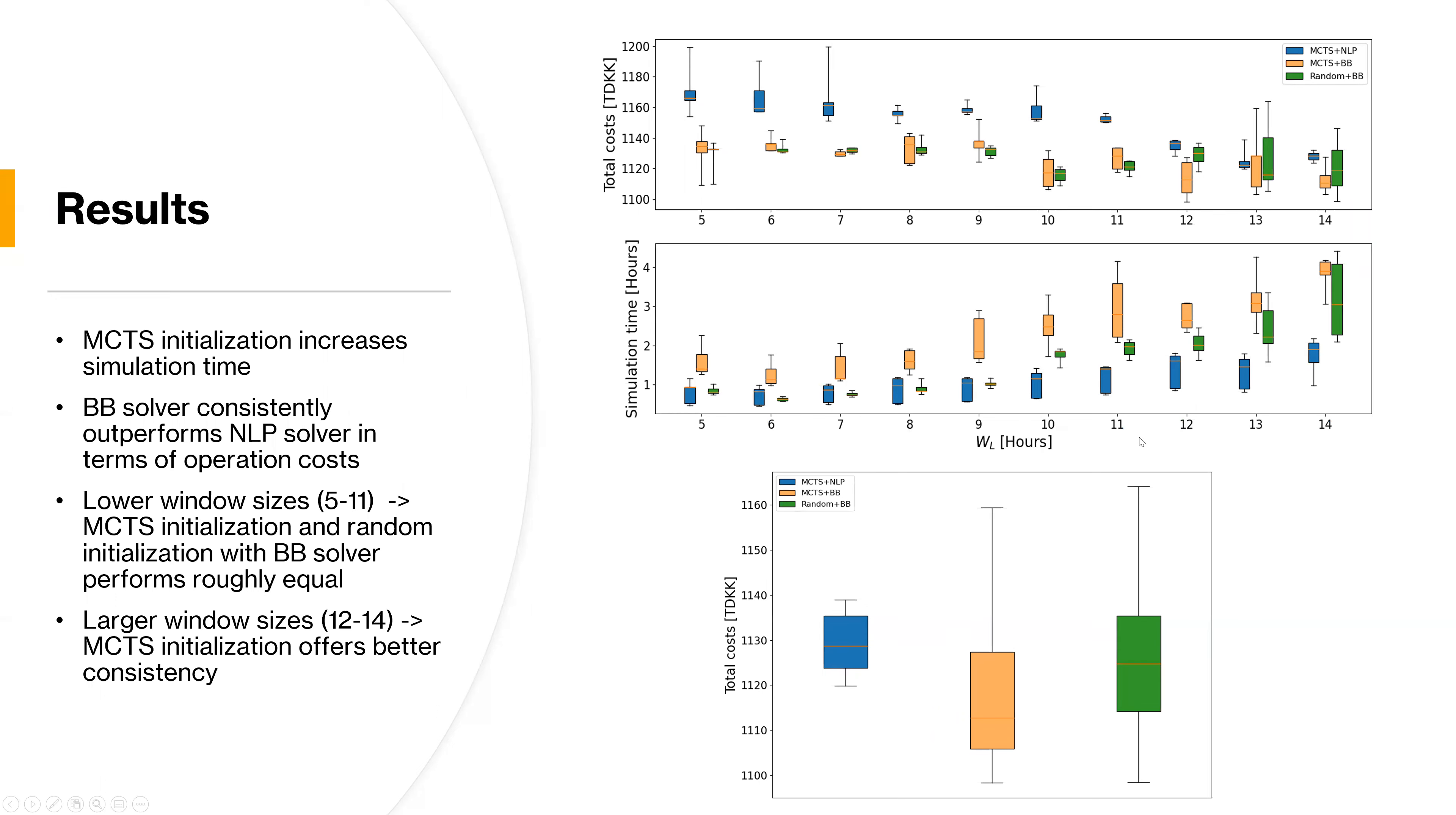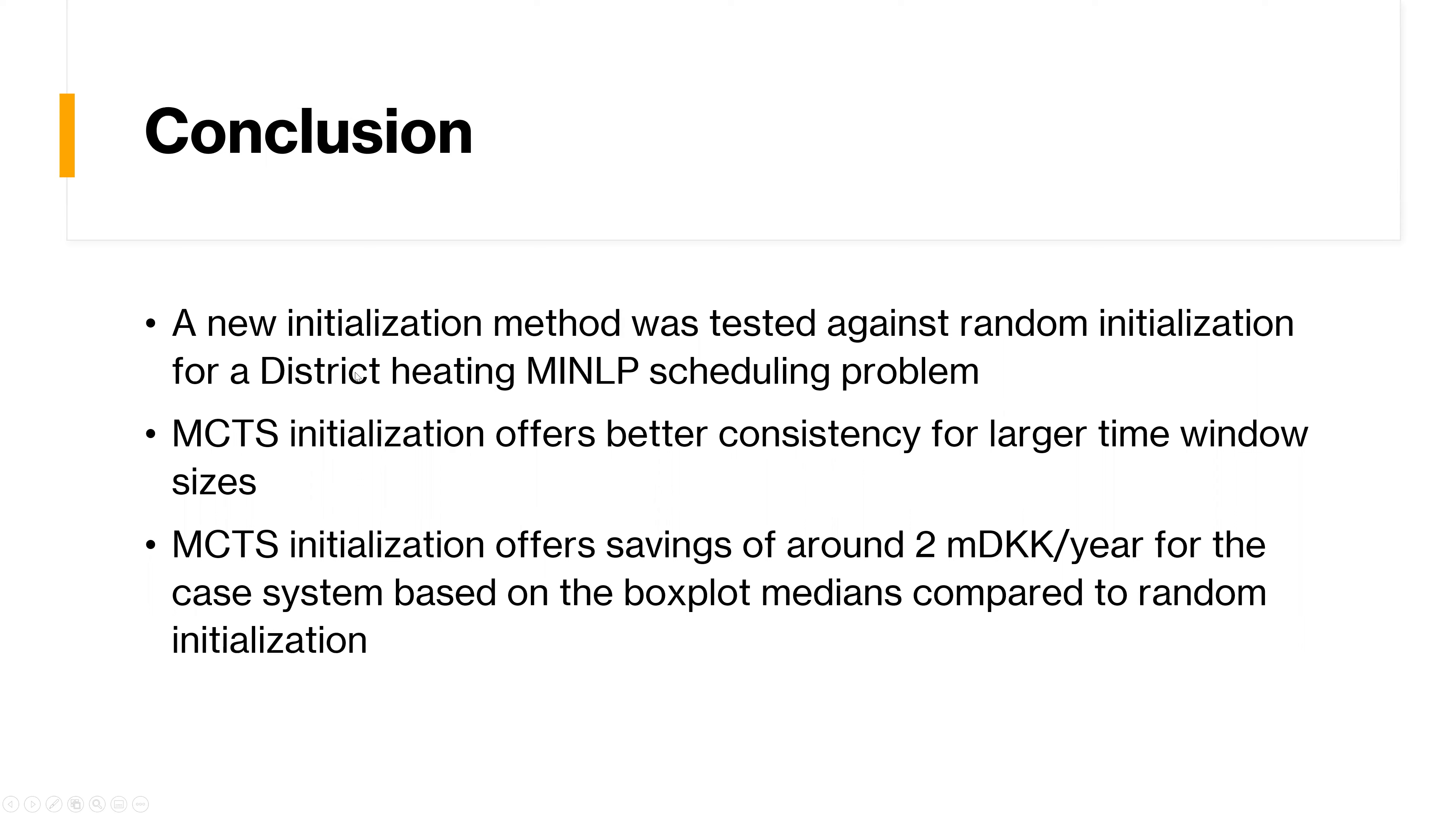So to conclude, we tested a new initialization method against the random initialization for this test problem, the district heating system. And we found that the Monte Carlo tree search initialization actually provided better consistency and better solutions for larger window sizes in this problem. And just to give you a metric of what this means, if you use the medians from the previous slide, you can get around a saving of 2 million Danish crowns per year for the case system if you use the Monte Carlo tree search initialization compared to the random initialization. And that was it from my side.